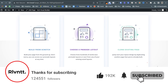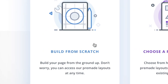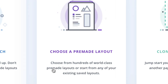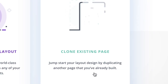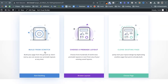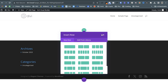We have three options: you can build from scratch, which gives you a blank canvas; you can choose one of the pre-made layouts — one of the main characteristics of the Divi theme is that it comes with hundreds of pre-designed templates; or you can clone one of your existing pages. I'm going to choose 'Build from Scratch' to show you how this works.